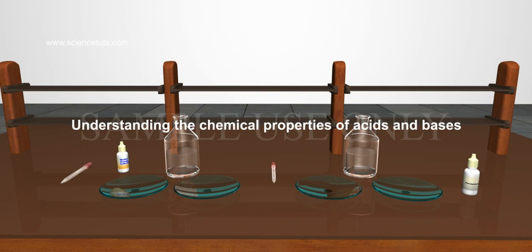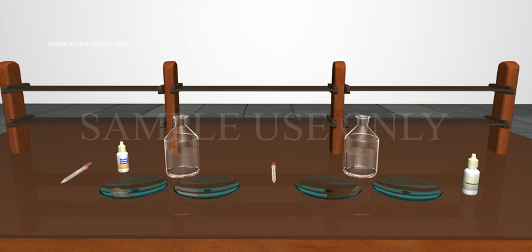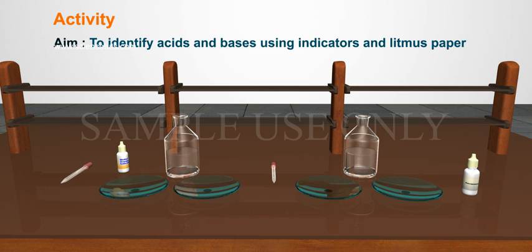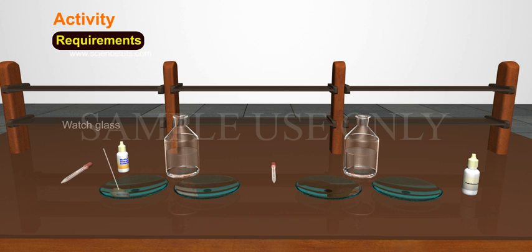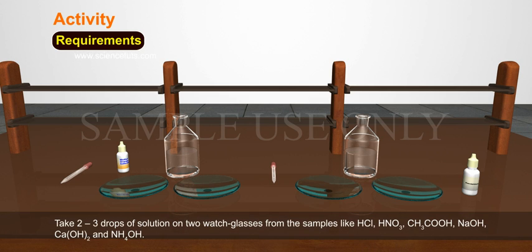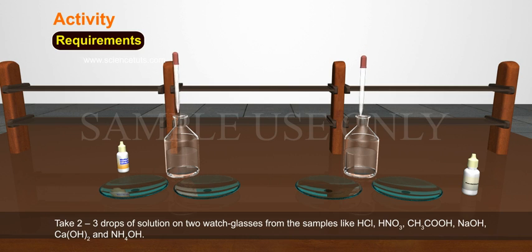Understanding the Chemical Properties of Acids and Bases. Experimental Activity: Aim — to identify acids and bases using indicators and litmus paper. Requirements: Hydrochloric acid, Nitric acid, Acetic acid, Sodium hydroxide, Calcium hydroxide, Ammonium hydroxide, and watch glasses. Take 2-3 drops of solution on two watch glasses from the samples: HCl, HNO3, CH3COOH, NaOH.